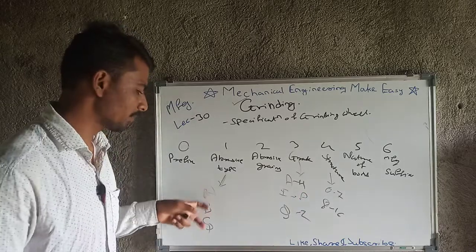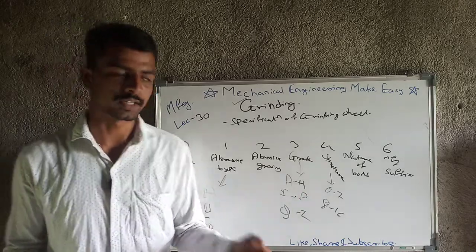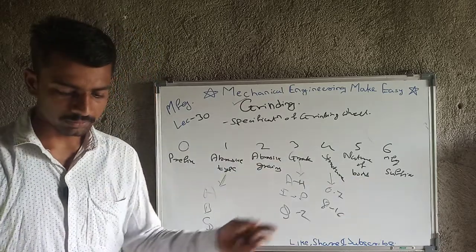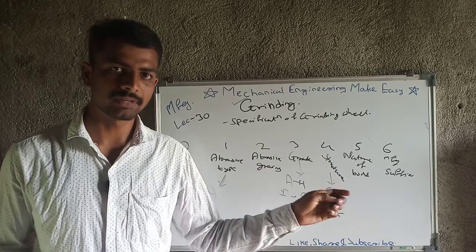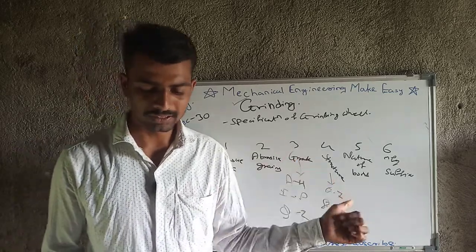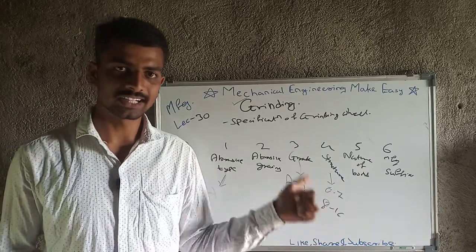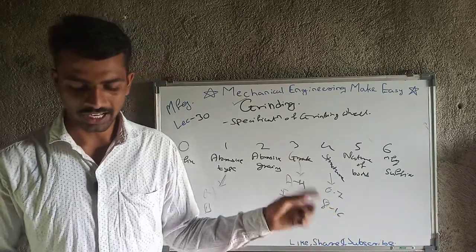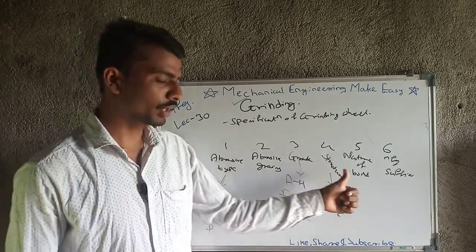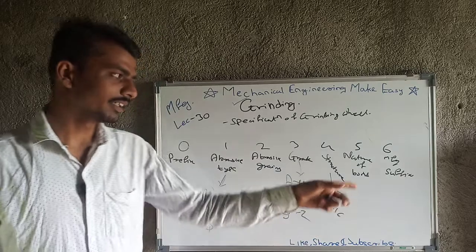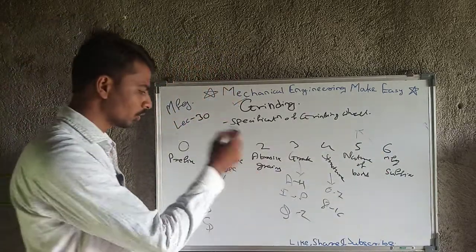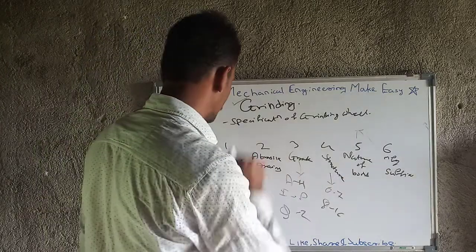Nature of bond refers to the binding between abrasive particles and is denoted by one alphabet. V stands for vitrified bond, B for bakelite, S for silicate bond, F for shellac bond, and R for rubber bond.